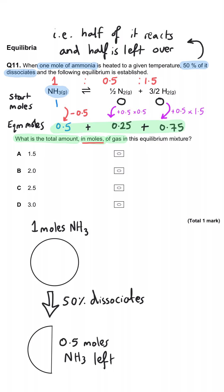And then the sum of all three of these numbers is the moles at equilibrium, and so that is 1.5, and so A is the correct answer.